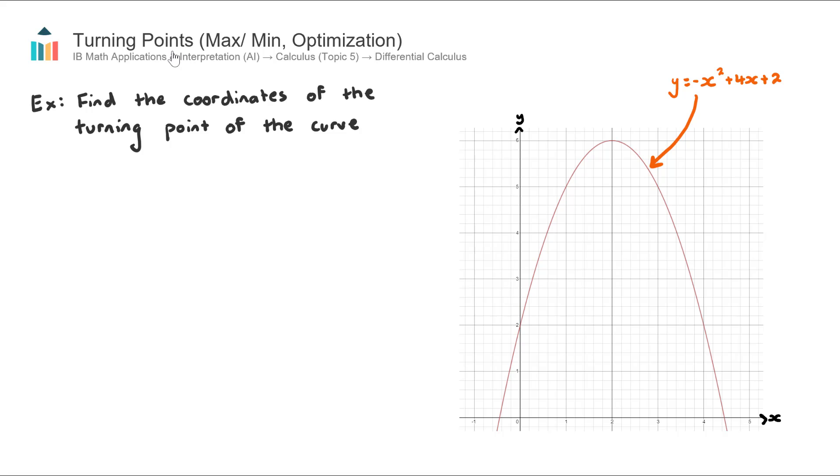In this video we look at how to use differential calculus to find the coordinates of turning points of curves. This is also known as finding maximums and minimums and it leads into the concept of optimization, but we'll talk about that at the end of this video.